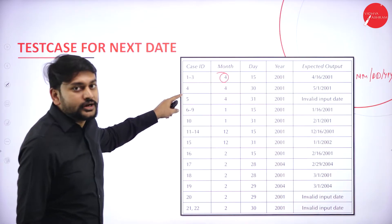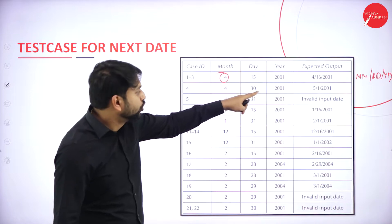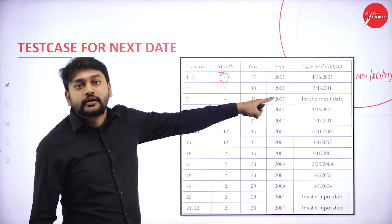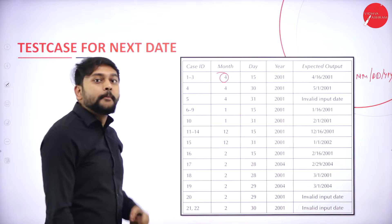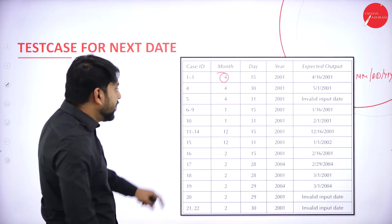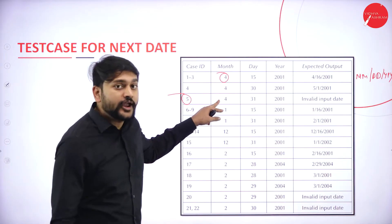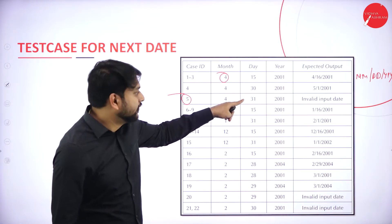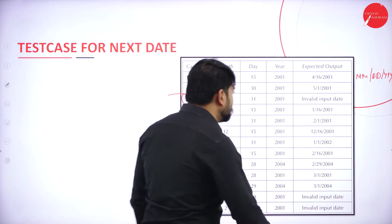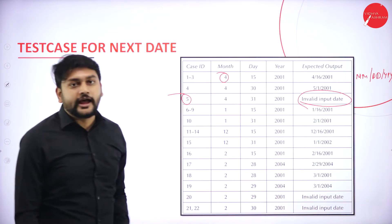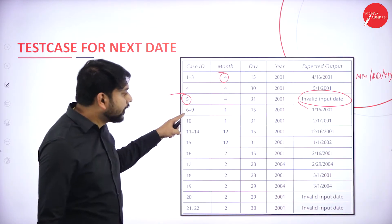For case number 4: month = 4, day = 30, year = 2001. The next date will be 5/1/2001 — we increment the month and reset the date. For case number 5: month = 4, day = 31, year = 2001. This should be invalid input data, because April cannot have 31 days.